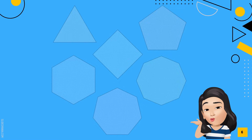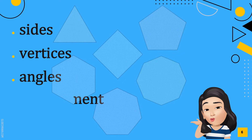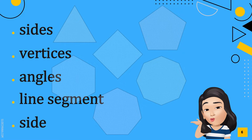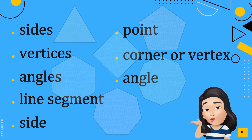Polygons are commonly described in terms of their specific properties such as sides, vertices, and angles. Each line segment of a polygon is called a side. The point where the line segments meet is called a corner or vertex. Each corner forms an angle.